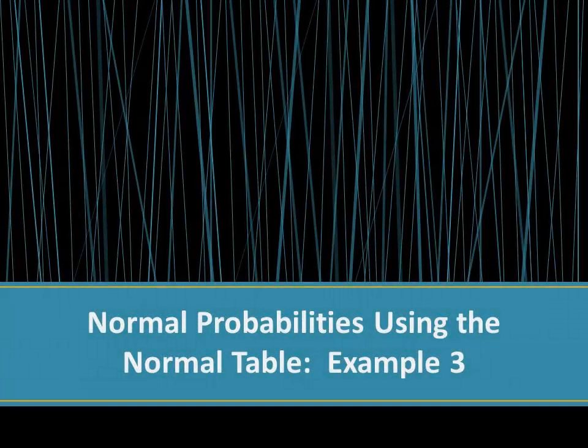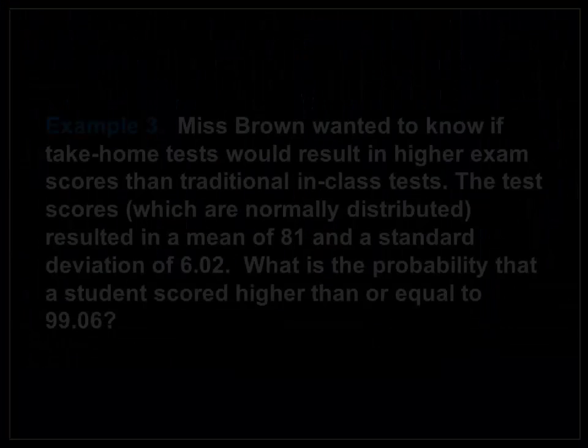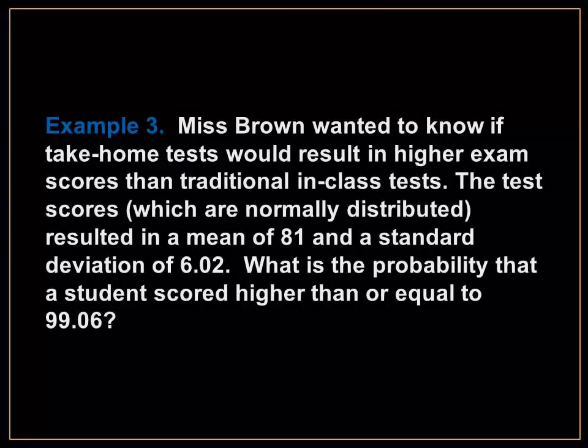Finding Probabilities Using the Normal Table. For example, Ms. Brown wanted to know if take-home tests would result in higher exam scores than traditional in-class tests. The test scores resulted in a mean of 81 and a standard deviation of 6.02. What is the probability that a student scored higher than or equal to 99.06?